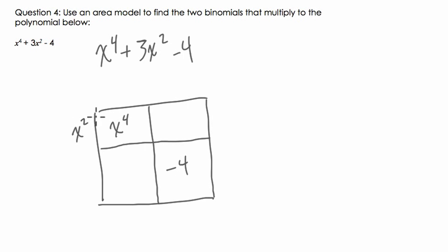x to the 4th is the same thing as x squared times x squared. Negative 4 is really just 4 times negative 1. Now I could have chose other factors of negative 4, but I chose 4 and negative 1 because I know that they need to add to this 3 right here. Why do I know that? Let's take a look.